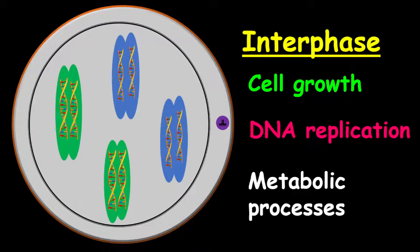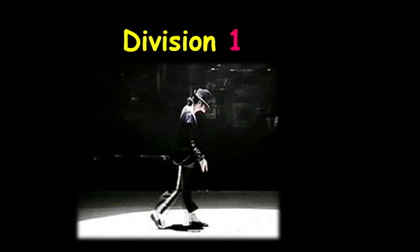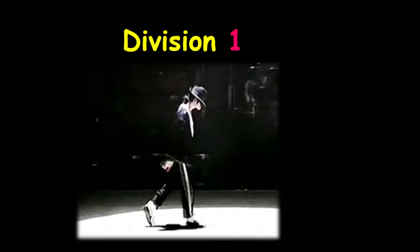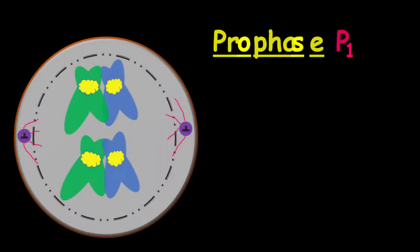Before I move any further, I just wanted to make a note that I'm using bold green and bold blue for my starting chromosomes. After the interphase, the cell will now undergo division one or otherwise called meiosis one. This is where the magic takes place. The first phase of division one is prophase one.